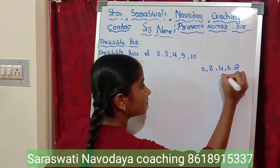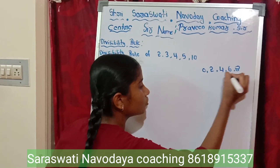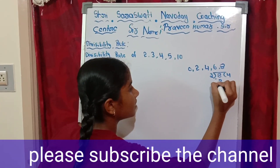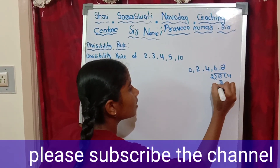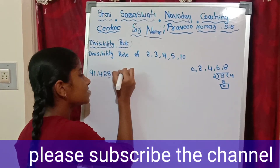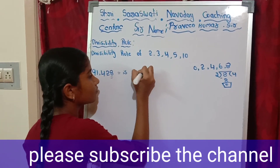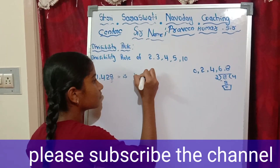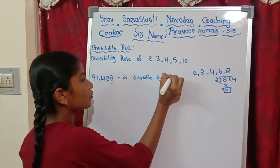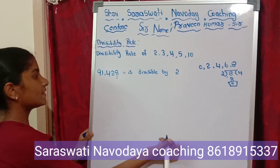8 divided by 2: 2 times 4 is 8, 8 minus 8 is 0. So 8 is completely divided by 2. Therefore 91,428 is divisible by 2.